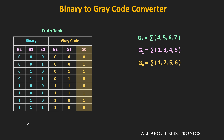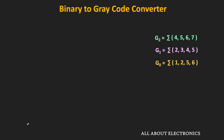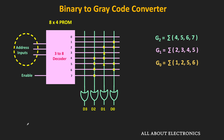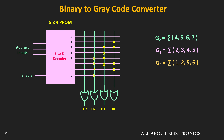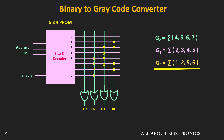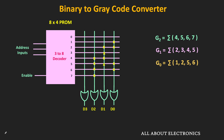These three functions can be implemented using the 8x4 PROM. The three binary inputs b2, b1, and b0 are applied to the address inputs of this ROM. Out of the four outputs, only three outputs — d2, d1, and d0 — are used. For g2, the four different interconnections 4, 5, 6, and 7 are connected with the OR gate. Similarly, for g1, outputs 2, 3, 4, and 5 are connected with the OR gate. And for g0, outputs 1, 2, 5, and 6 of the decoder are connected with the OR gate. In this way, it is possible to implement the binary-to-gray code converter using the PROM.